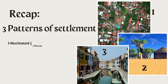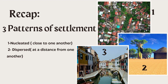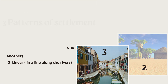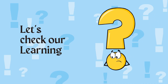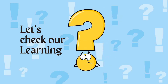Let's recap today's topic. Today we talked about three patterns of settlements. The first pattern is nucleated, in which houses are close to one another. The second is dispersed, in which houses are at a distance from one another. And the third pattern is linear, in which houses are in a line along the rivers. Hope it makes sense — that was all for today's topic.